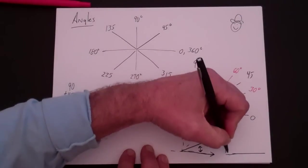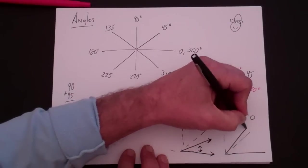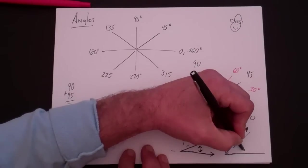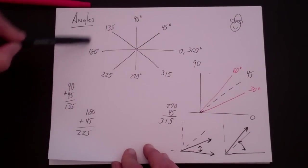And a 60 degree angle, if this is 90, that's 45, it's slightly more. So that's 60 degrees. So anyway, the first thing I want you to do is memorize these.